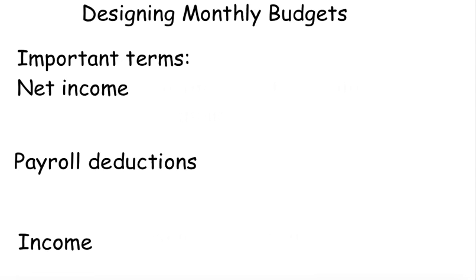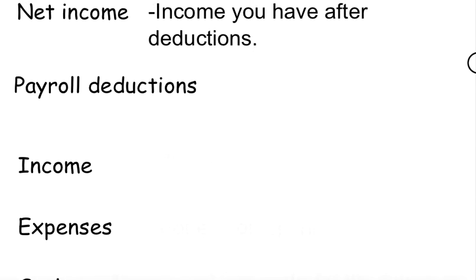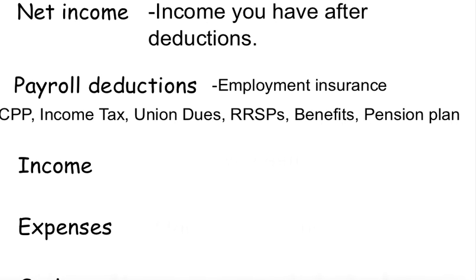Looking at designing monthly budgets, we've got a few important terms. The first one is net income — income that you have after your deductions. Net means how much you make after all the deductions. Your gross income is how much you make before deductions. Net income is after all your deductions. Payroll deductions include employment insurance, Canadian Pension Plan, income tax, union dues, RRSPs, benefits, pension plans, etc.